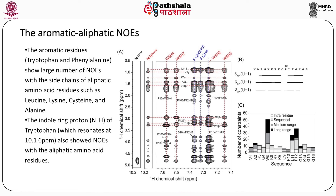The aromatic-aliphatic NOEs — the aromatic residues tryptophan and phenylalanine show a large number of NOEs with the side chains of aliphatic amino acid residues such as leucine, lysine, cysteine and alanine. The indole ring proton N-epsilon H of tryptophan, which resonates at 10.16 ppm, also showed NOEs with aliphatic amino acid residues as shown in the leftmost strip. Then you have NOEs between aromatic residues in the range of 7.1 to 7.6 ppm with different aliphatic residues. Various NOEs are plotted in figure B and the number of NOEs for each particular residue is compiled in figure C.